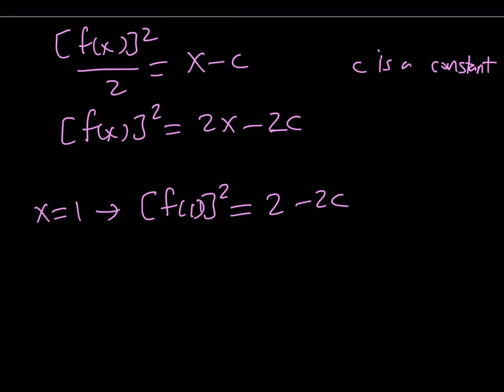And from here, we get two values for f of 1. Obviously, f of 1 can be the square root of 2 minus 2c, or f of 1 can be written as negative square root of 2 minus 2c. We also know that f of 1 is equal to 4. So if we set the first one equal to 4, from here we get 2 minus 2c is equal to 16. 2c is equal to negative 14, and c is equal to negative 7.